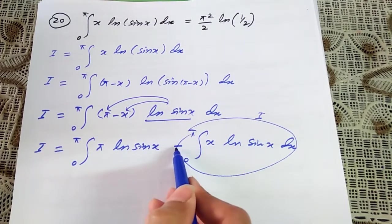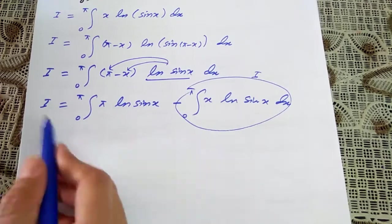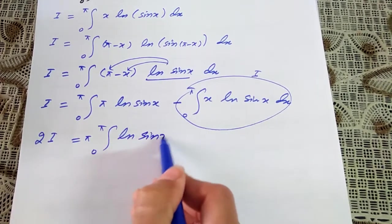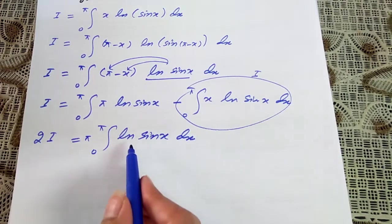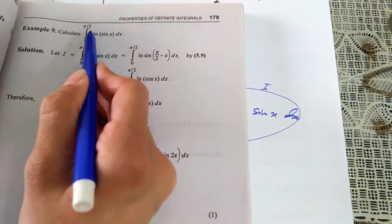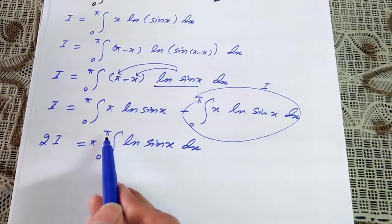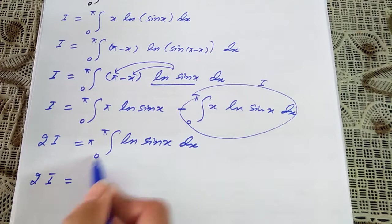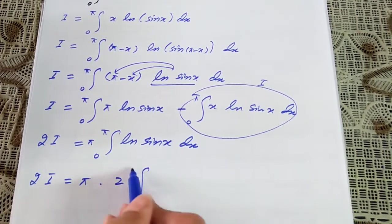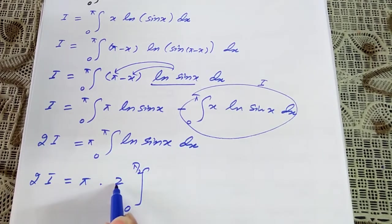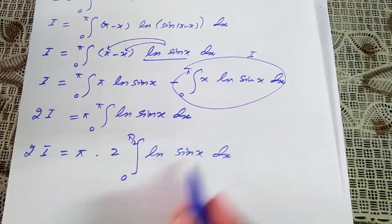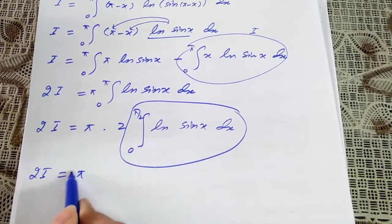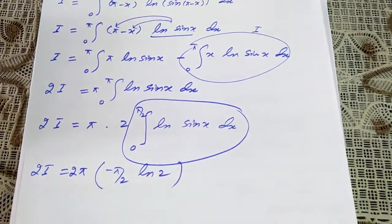Moving i to the left side gives 2i equals π times the integral from 0 to π of ln(sin x) dx. Using theorem 5.11, this upper limit π can be replaced using 2 times the integral from 0 to π/2: so 2i equals π times 2 times the integral from 0 to π/2 of ln(sin x) dx. From Example 9, the integral from 0 to π/2 of ln(sin x) dx equals minus π/2 times ln 2. So 2i equals π times 2 times (minus π/2 ln 2). The two values cancel, giving 2i equals minus π² ln 2, so i equals minus π²/2 times ln 2.